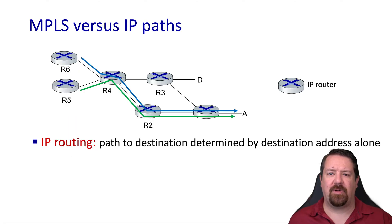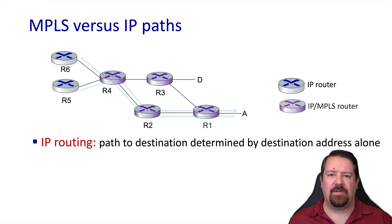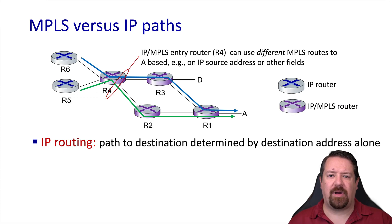Let's compare multi-protocol label switching with IP. In this case we have both a blue and a green IP flow headed for destination A, and because IP uses destination-based forwarding they will both converge onto the same path through the network. If instead we make this an MPLS network, then the first router that these flows arrive at that's part of the MPLS network needs to decide what label to assign to each of these flows. It can look at the source address and make a decision based on something beyond just the destination, and put these two on different flows if it wants them to take different paths through the network for traffic engineering reasons.